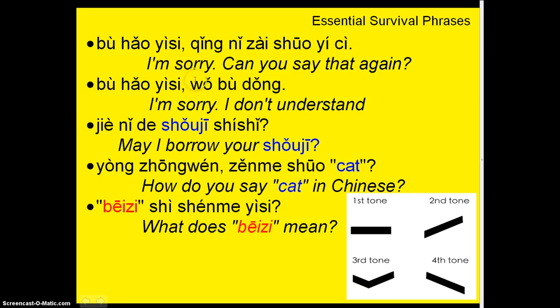The second survival phrase — I'm sorry, I don't understand — is: bù hǎo yìsi, wǒ bù dǒng. Bù hǎo yìsi, wǒ bù dǒng.